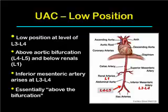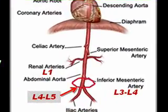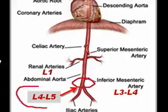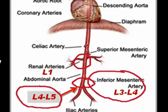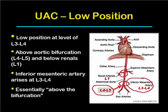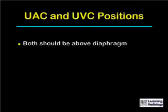The low position for an umbilical artery catheter is at the level of about L3 to L4. That is above the aortic bifurcation at L4 to L5, and below the renal arteries at L1 and the inferior mesenteric artery, which arises from L3 to L4. Essentially, this low position is above the bifurcation.